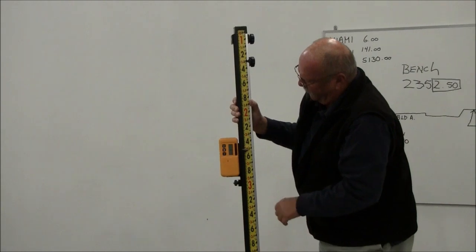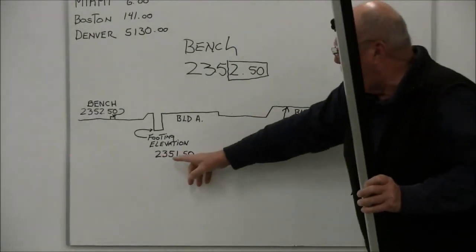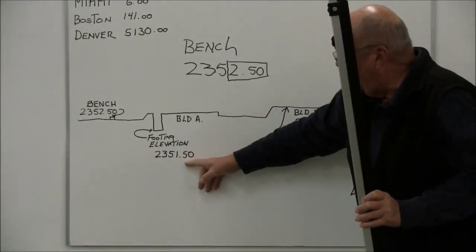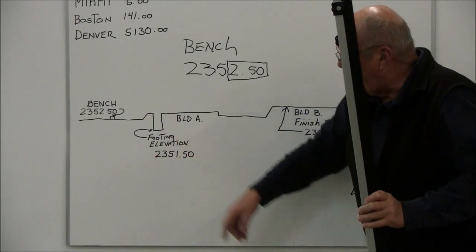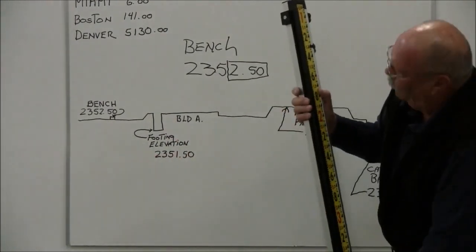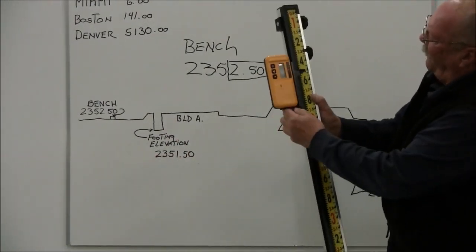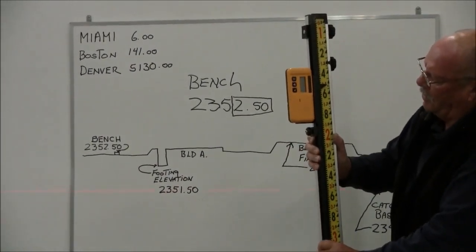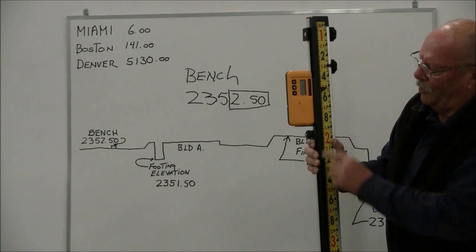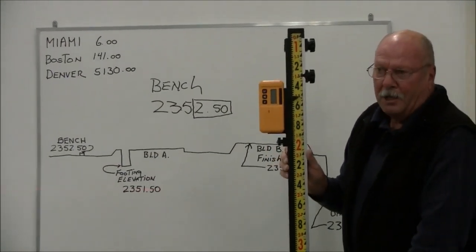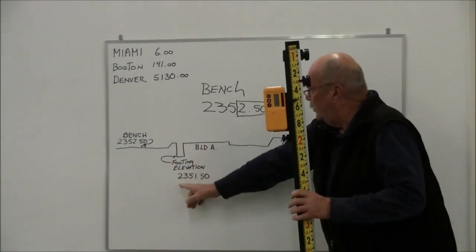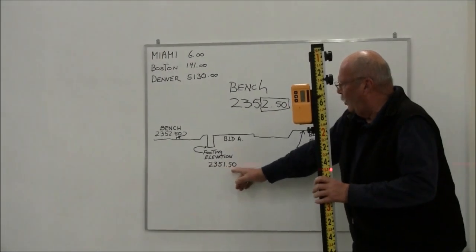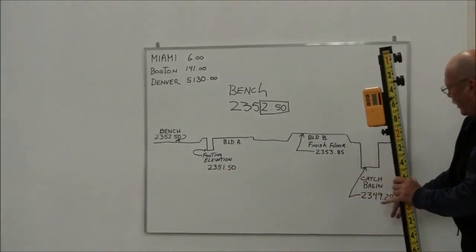Okay, so I'm on grade there and I'm at 2.50. If I want to pick up elevation at 2351.50, which is say a footing elevation, I can run the receiver up to 1.50. And as I dig, when the receiver goes off, I'll know that the bottom of my rod is at this 2351.50.